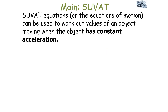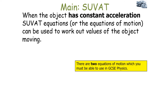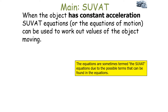The SUVAT equations, or equations of motion, can be used to work out values of an object moving when it has constant acceleration. There are two equations of motion which you've got to be able to use in GCSE physics. These equations are sometimes termed the SUVAT equations due to the possible terms that can be found in them.